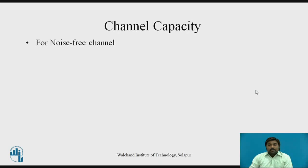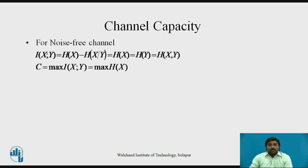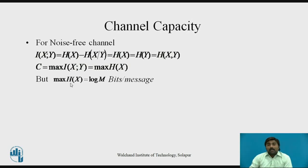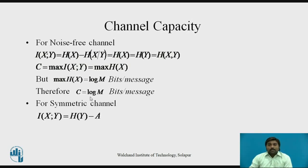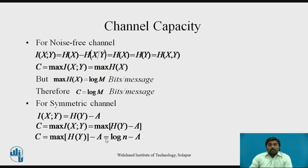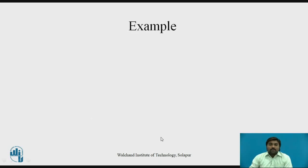Now let us find the channel capacity equations for noise-free and symmetric channels. For a noise-free channel, C = max I(x;y) = max H(x) = max H(y) = max H(x,y). Since max H(x) = log m, the channel capacity for a noise-free channel equals log m bits per message. For a symmetric channel, I(x;y) = H(y) − A, so C = max H(y) − A = log n − A, where n is the number of output symbols.